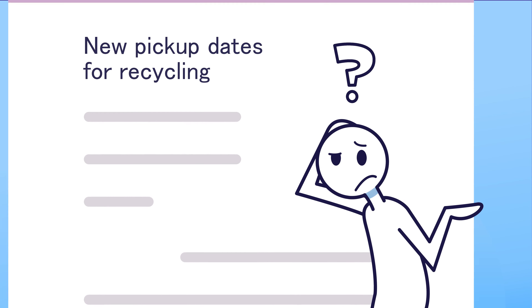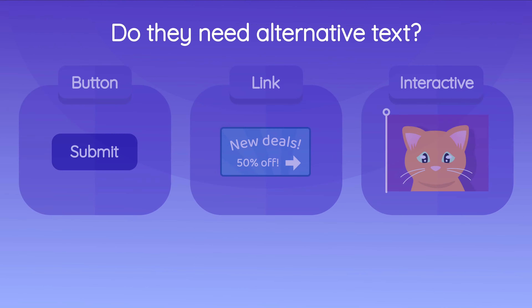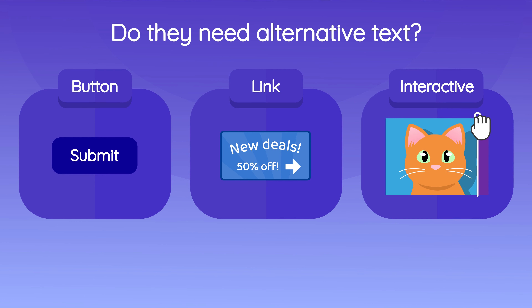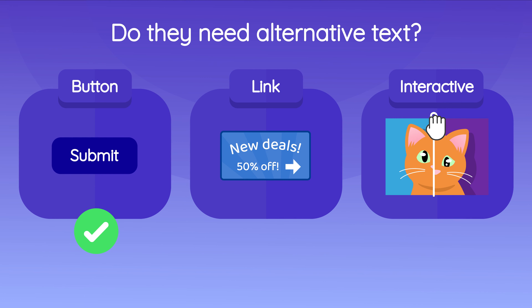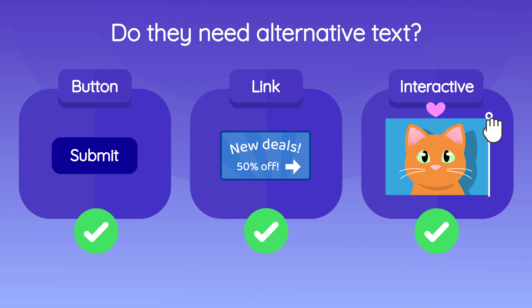So how do you know when you need alt text? Things to consider: Does the image do something? Is it a button? Is it a link? Is it something you interact with? All of these need alt text to describe what they are and what function they perform. Make sense?